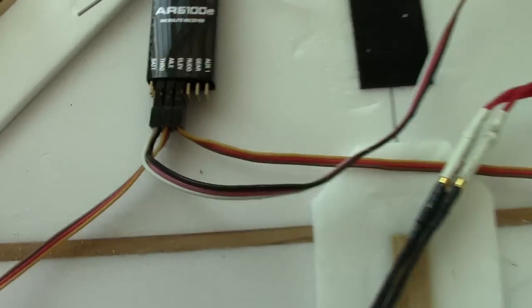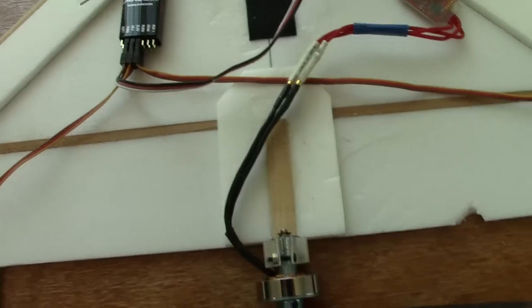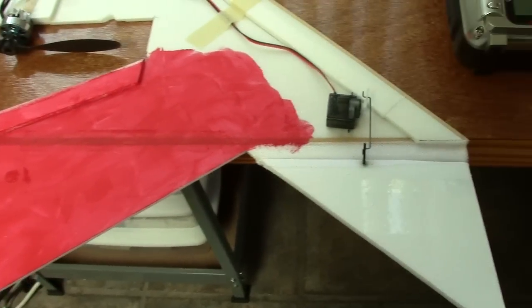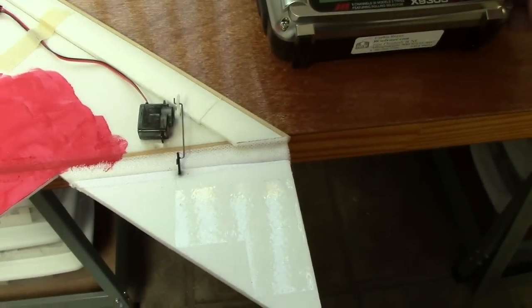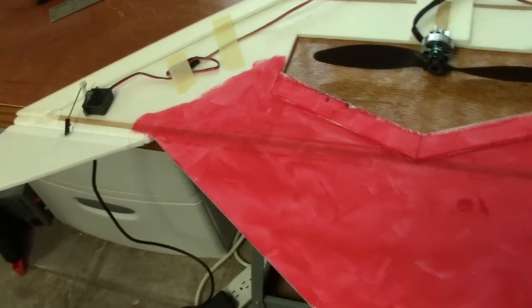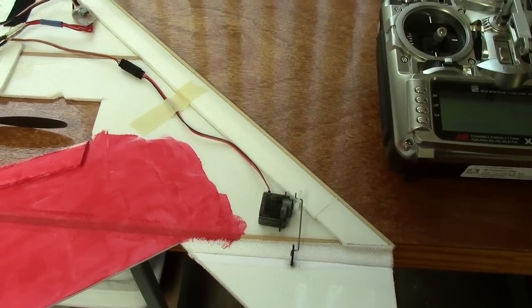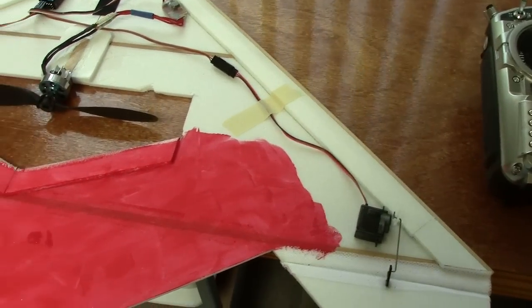Okay, and then I have throttle. If you do it like that, you're going to get the elevator. Right now I have full up elevator, so both of them are up. But I also have the aileron function.